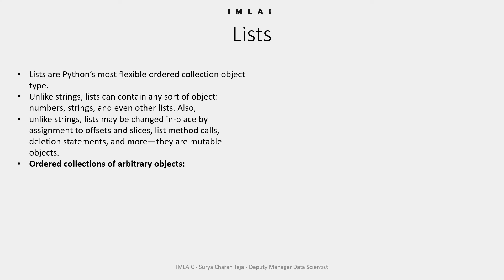Now we will discuss some of the brilliant qualities of a list object. The first one is it is an ordered collection of arbitrary objects. Arbitrary objects means basically any object which can be included — any type of object. The second quality is it can be accessed by offset indexing, which we have discussed in a previous video.